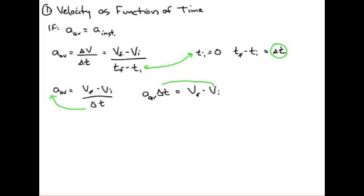Further, if we add v initial to both sides, our final equation is: final velocity equals initial velocity plus acceleration times the change in time. Velocity as a function of time, equation derivation number one.